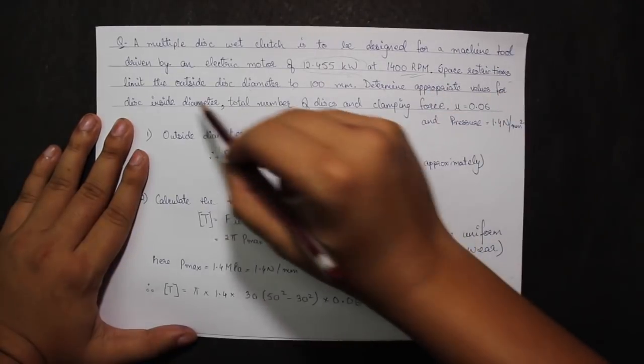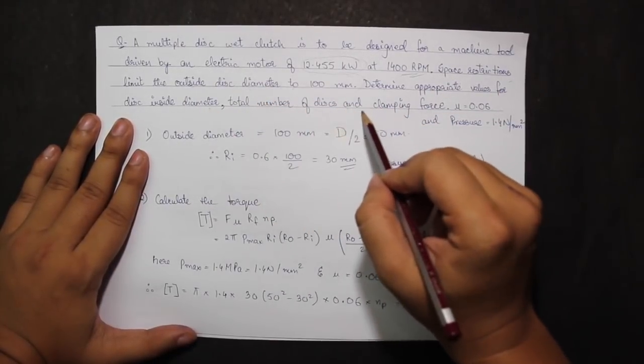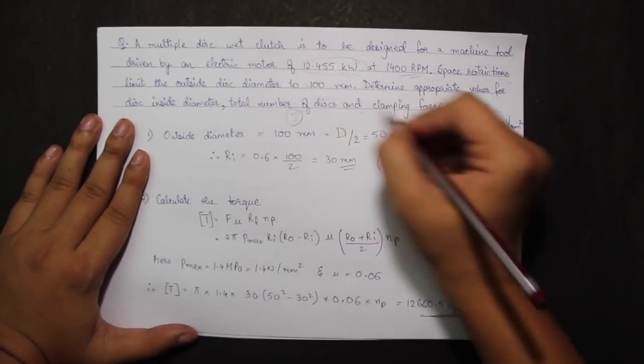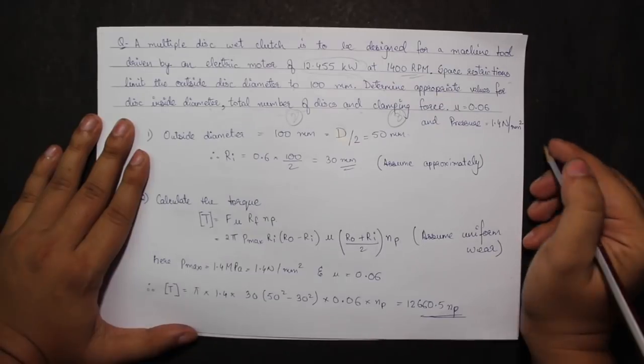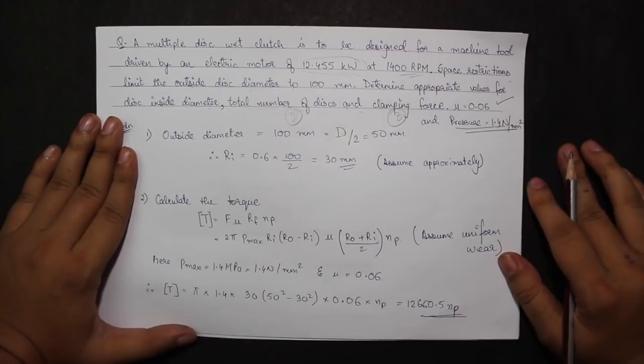Space restrictions limit the outside disc diameter to 100 mm. Determine appropriate values for disc inside diameter, total number of discs, and clamping force. Mu is given as 0.06 and the pressure is given as 1.4 Newton per mm square.